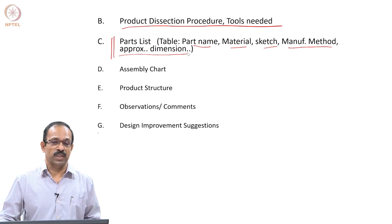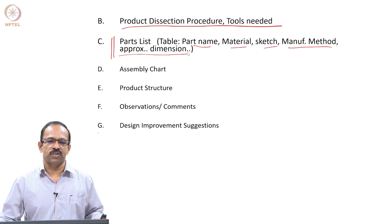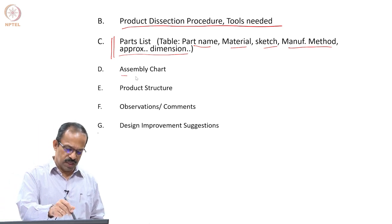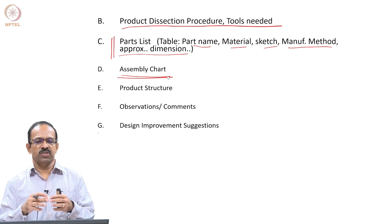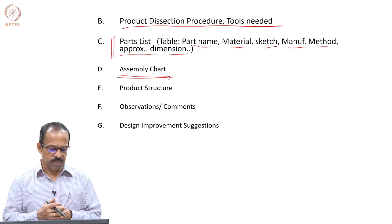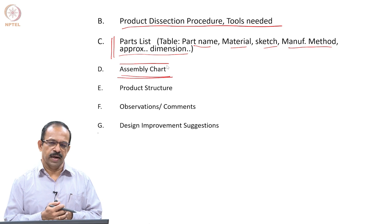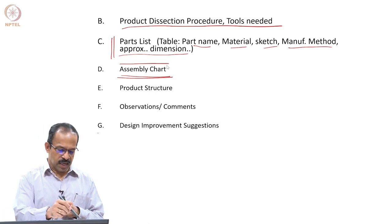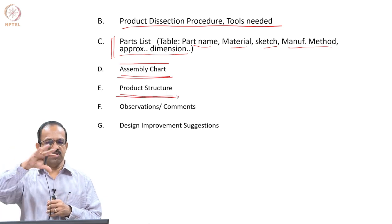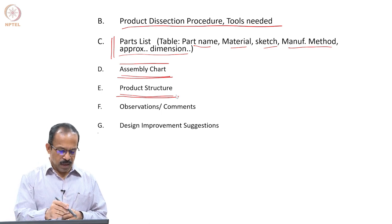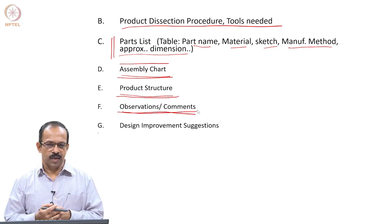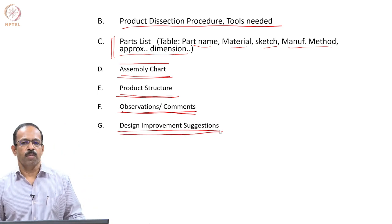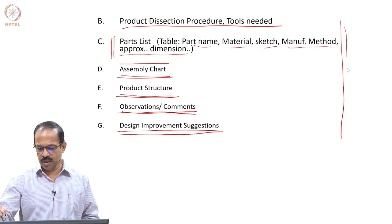Whatever manufacturing methods you can identify — if you are not sure, discuss with the TA and then write them down. Once you have the parts list, look at the assembly chart: how different parts contribute to a sub-assembly and how sub-assemblies contribute to the main product. That leads to a product structure showing assembly, sub-assembly, and parts. The last part is to observe the product, give your comments about it and its functions, and suggest how you can improve the product.